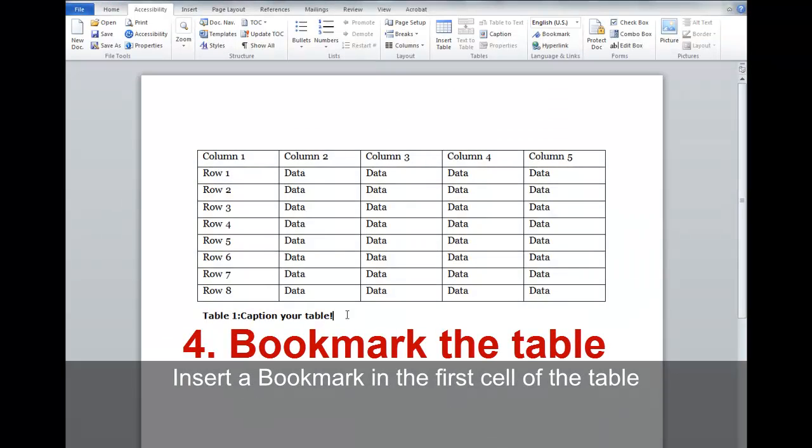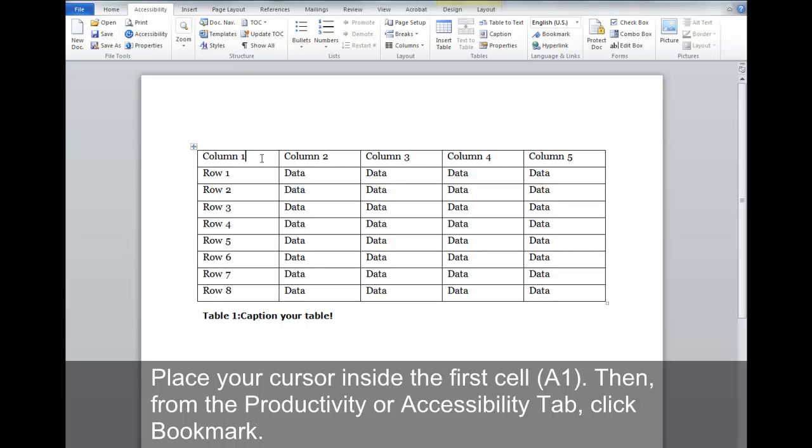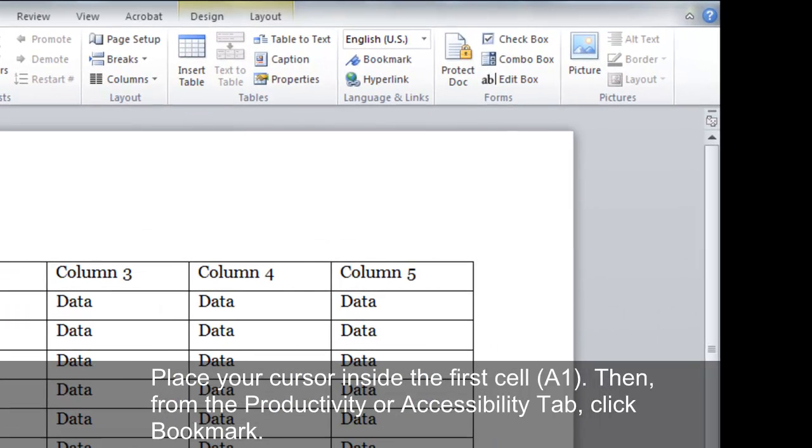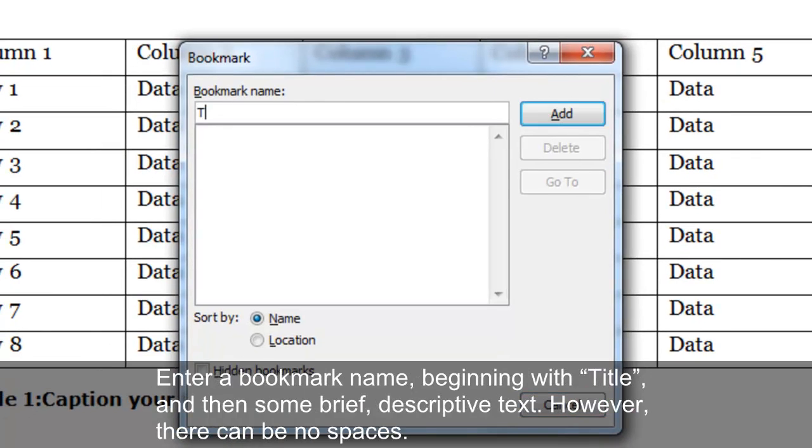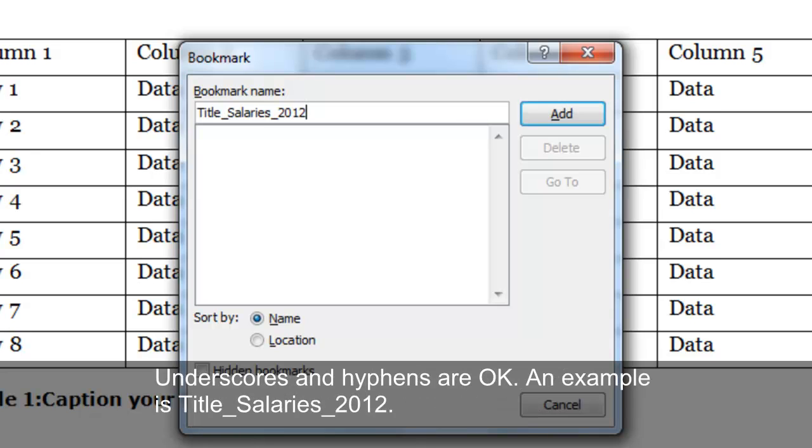Insert a bookmark in the first cell of the table. Place your cursor inside the first cell, A1. Then, from the Productivity or Accessibility tab, click Bookmark. Enter a bookmark name, beginning with title, and then some brief descriptive text. However, there can be no spaces. Underscores and hyphens are okay. An example is Title_Salaries_2012.